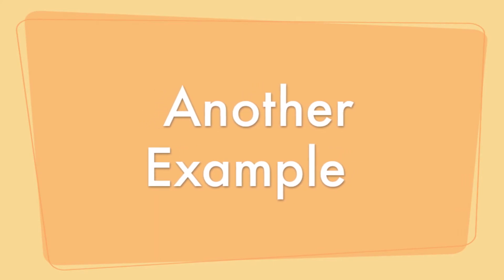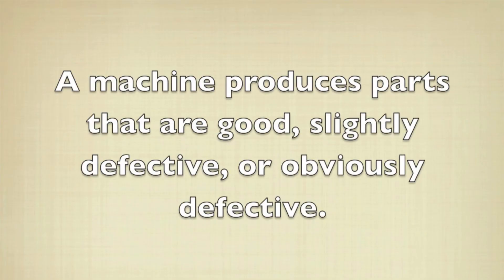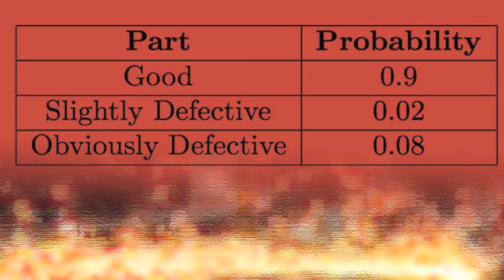Let's take a look at another example. We have a machine that produces parts that are either good, slightly defective, or obviously defective. The probability that it produces each of these types of parts is given by this distribution table here. So there's a good chance that the part that comes out is good, and there's a small chance that it's defective.